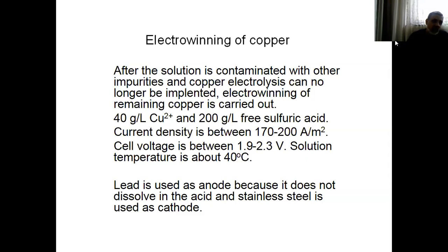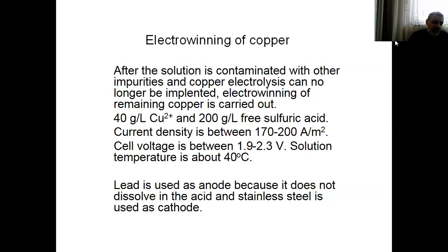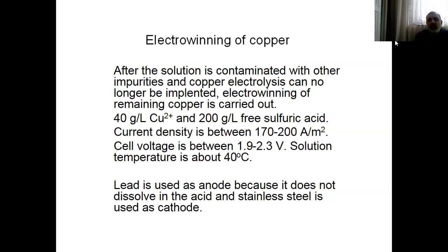Why is the cell voltage high? It's simply because we need to get the electrons from the oxidation of water — this is the reason the cell voltage is high. Lead is used as the anode because it does not dissolve in sulfuric acid. Stainless steel is used as the cathode. This is different from electro-refining of copper, where we use titanium as the initial cathode, and afterwards copper becomes the cathode. In electrowinning, the anode is always the impure copper.